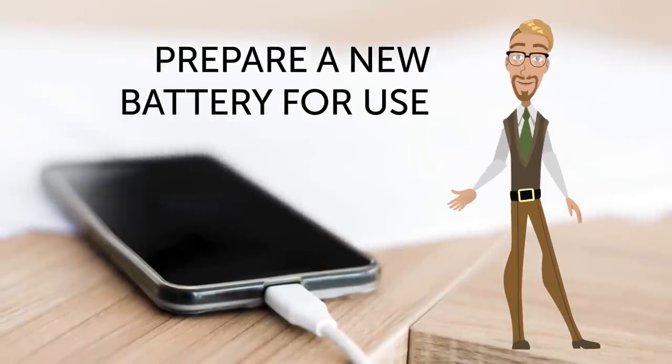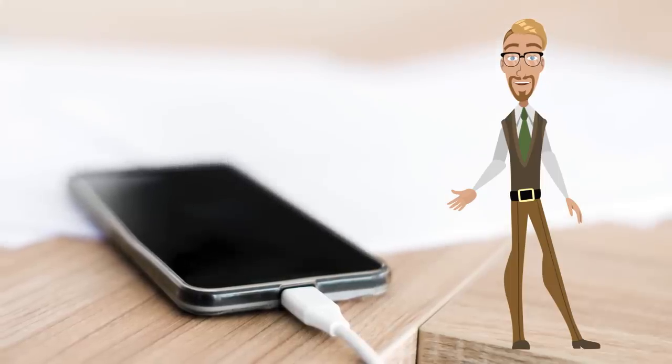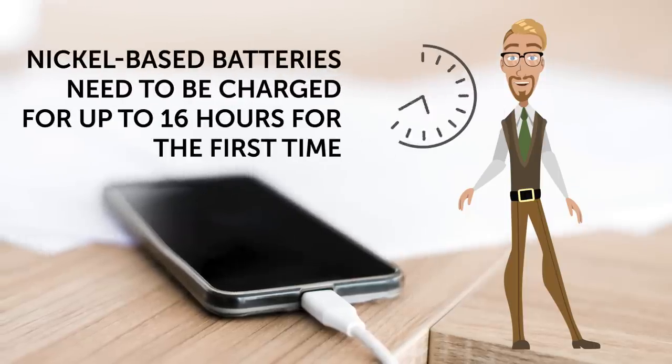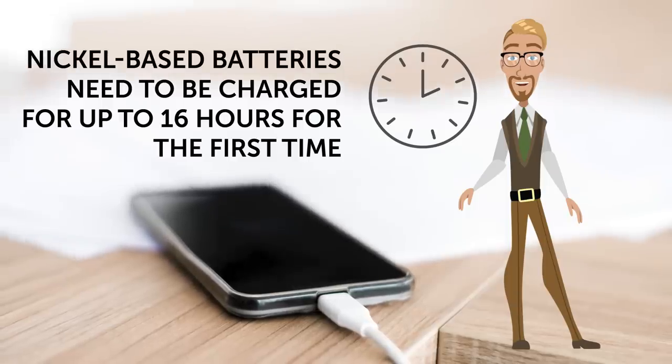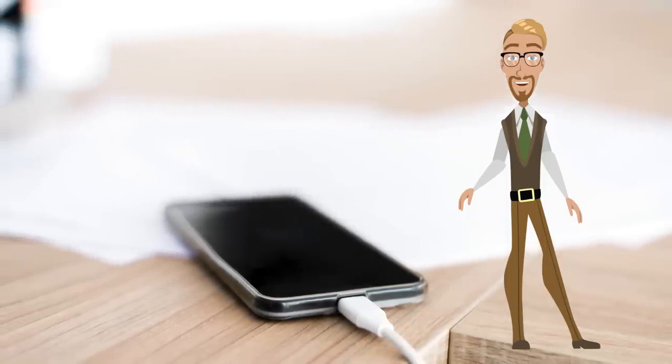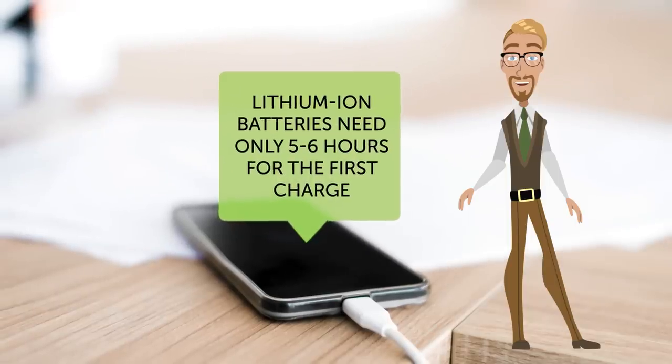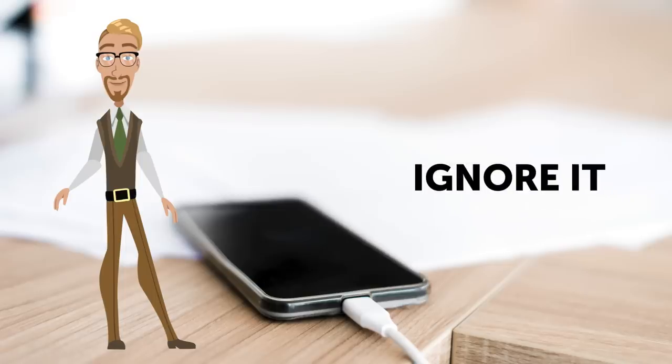Prepare a new battery for use. If you buy a brand new phone, fully charge its battery before you start using your device. Remember that nickel-based batteries need to be charged for up to 16 hours for the first time, and then run through 3 or 4 full-charge-to-empty cycles. Lithium-ion batteries need only 5 to 6 hours for the first charge. And even if your phone tells you that the battery is full before this time is up, ignore it. If the battery hasn't been initialized, it won't work to full capacity throughout its lifespan.